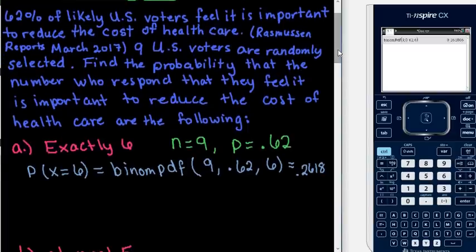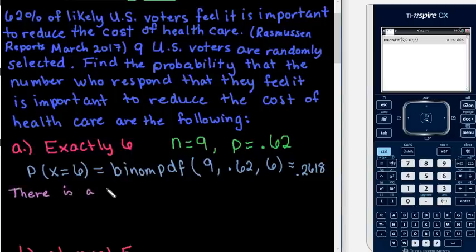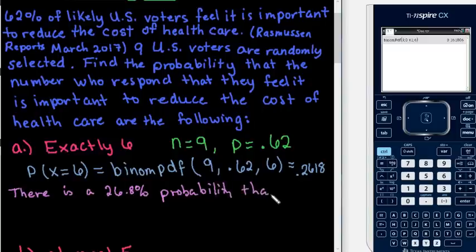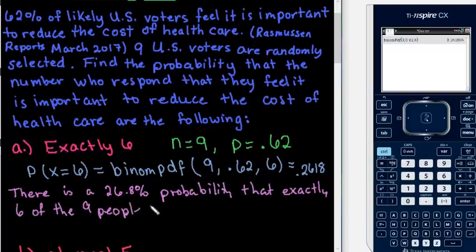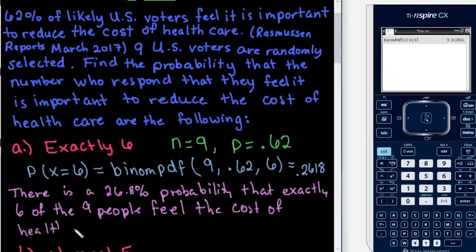It's always important to answer the question using a complete sentence. For this one I am going to write it as a sentence. We would say: there is a 26.18% probability that exactly 6 of the 9 people feel the cost of health care needs to be reduced.